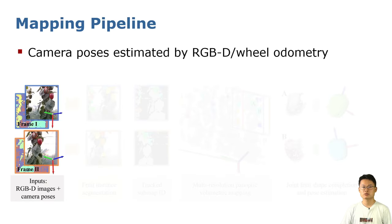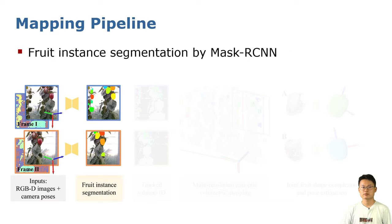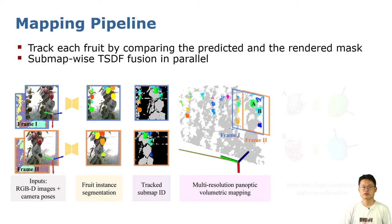The input to the mapping system is a stream of RGB-D images. The camera poses are estimated by either RGB-D odometry or wheel odometry. Next, we use a Mask RCNN model to predict the instance mask for the fruits. Then we track each fruit to get a globally consistent semantic map ID for every fruit and background plant. Meanwhile, TSDF Fusion is done in parallel for each semantic map for mesh reconstruction.